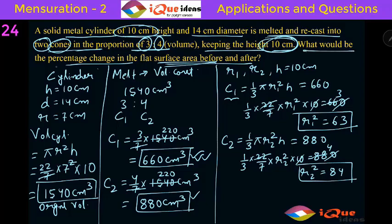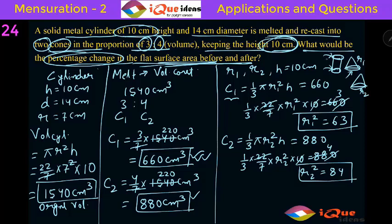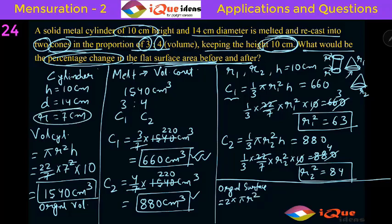The question asks for the percentage change in the flat surface area. In a cylinder, the flat surface area consists of the two circular surfaces. In a cone, the flat surface is one circular base. So the original flat surface area for the cylinder is 2 times Pi R square. With the original R equal to 7, that gives 2 into Pi into 49, which is 98 Pi.